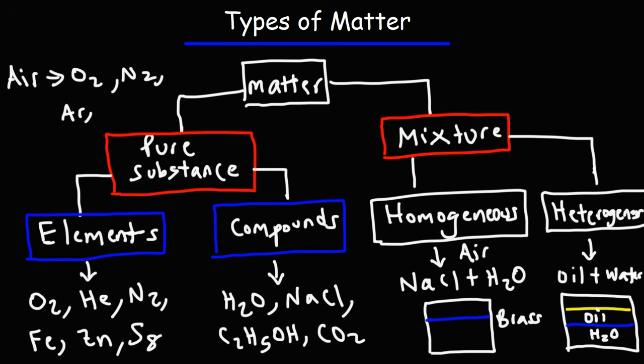Sand and water for instance is a heterogeneous mixture. If you were to mix sand and water it would look something like this. So here's the water and here will be the sand. They don't mix. You could see the two distinct parts. That makes it a heterogeneous mixture.